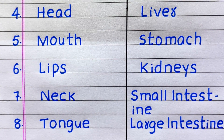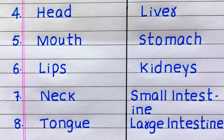The fourth name of an external organ is head. Fifth, mouth. Sixth, lips. Seventh, neck. Eighth, tongue.